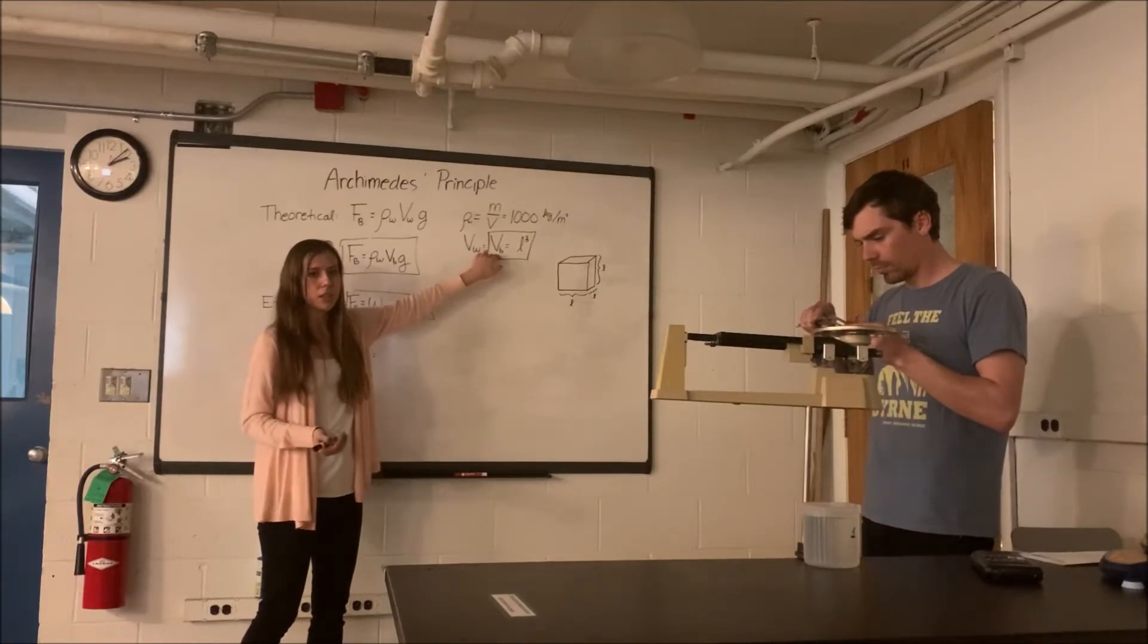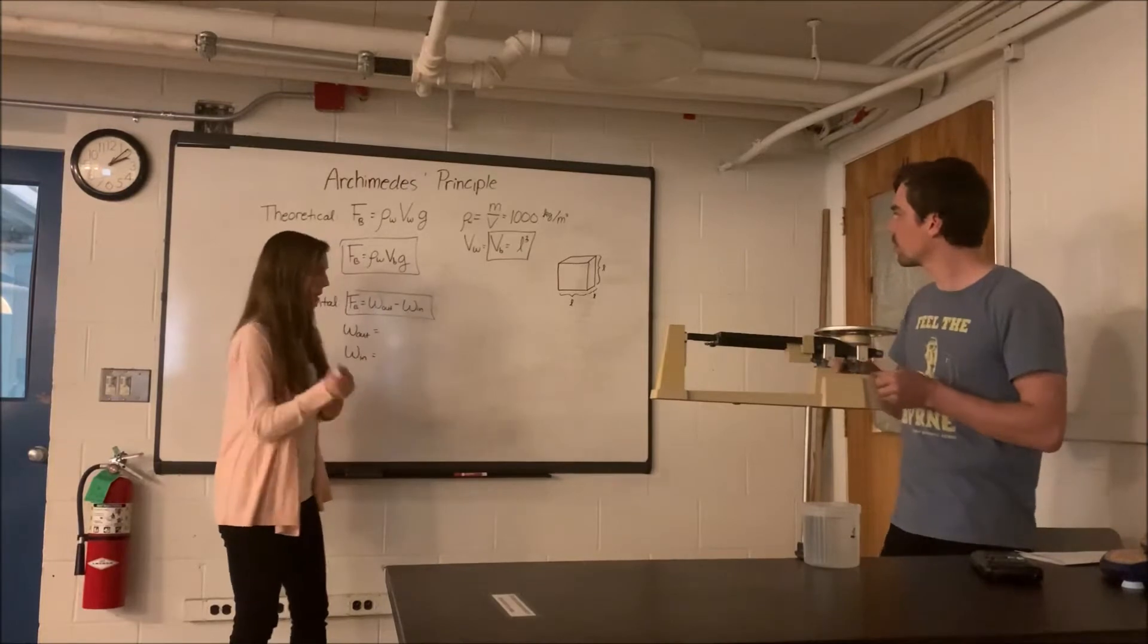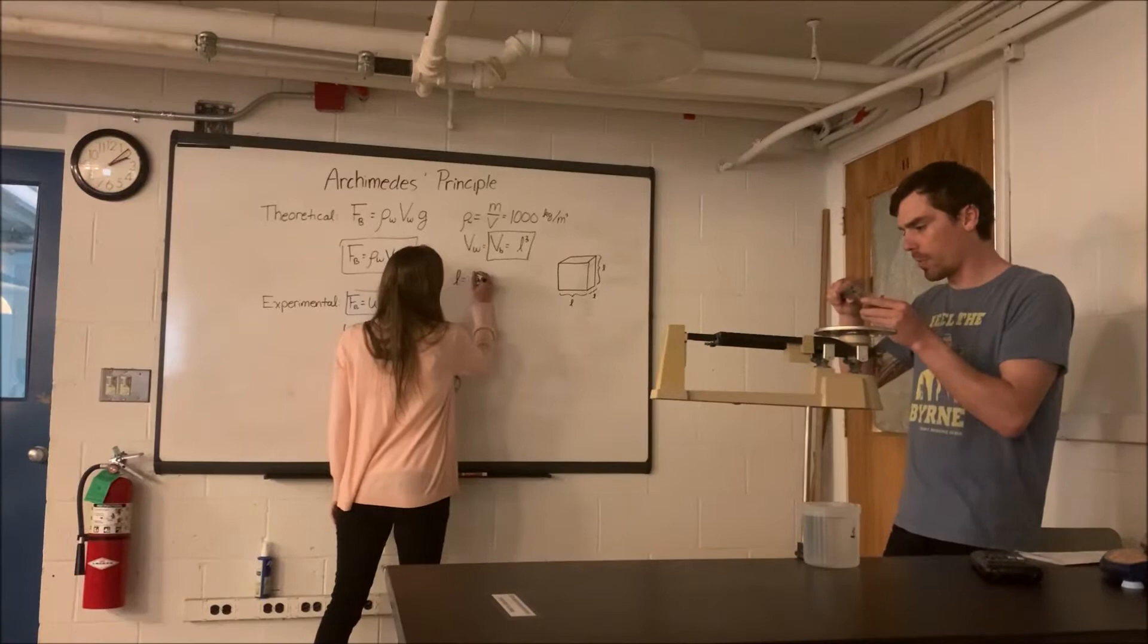And since our block is conveniently a cube, v_b equals l cubed, and Chip is going to read l off to me right now. We're getting 3.205 centimeters.